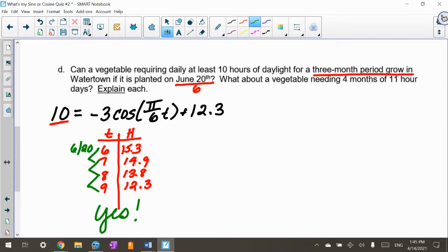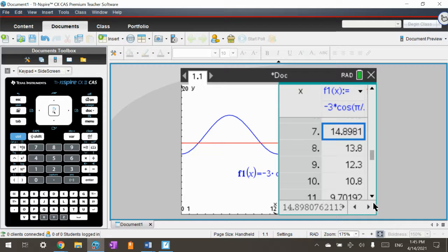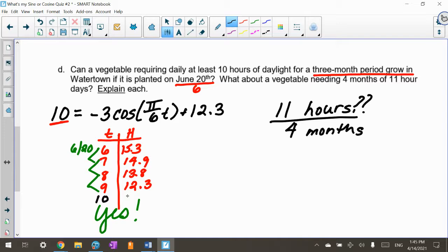Now they ask, would there be enough if you had a vegetable that needed 11 hours? Is there four months of 11 hours? If I look at this, I've got one, two, three right here. But then I'd actually have to do one more. If I look at my calculator, I see at 10, it's 10.8. So I would need that extra month, and it'd have to be 11 hours. Right here where it fails, there would be no. There's no way I would be able to plant a vegetable that needed four months of 11 hour days.